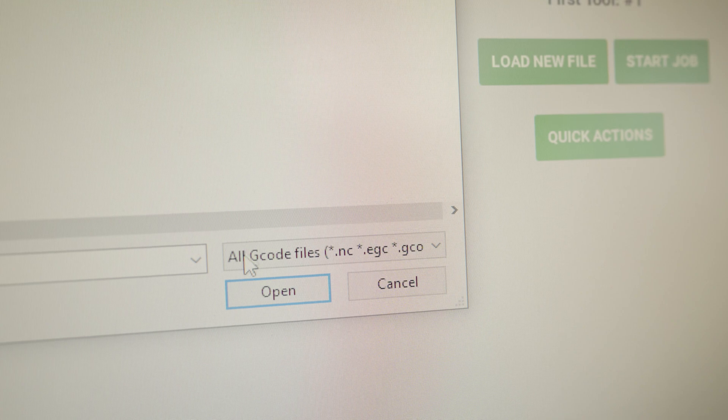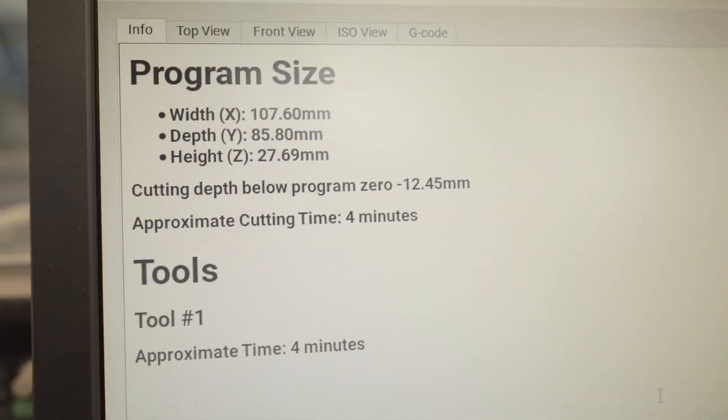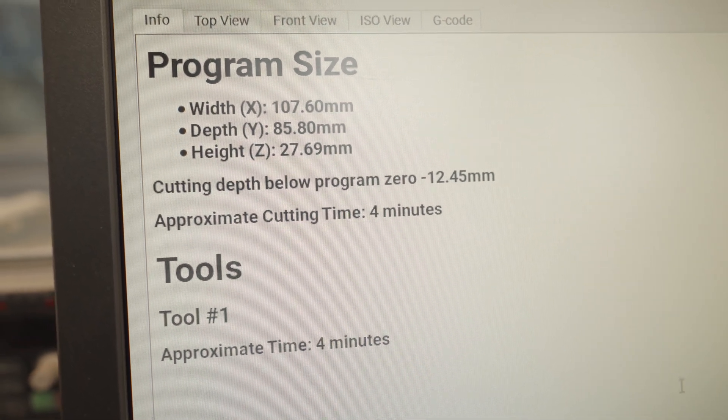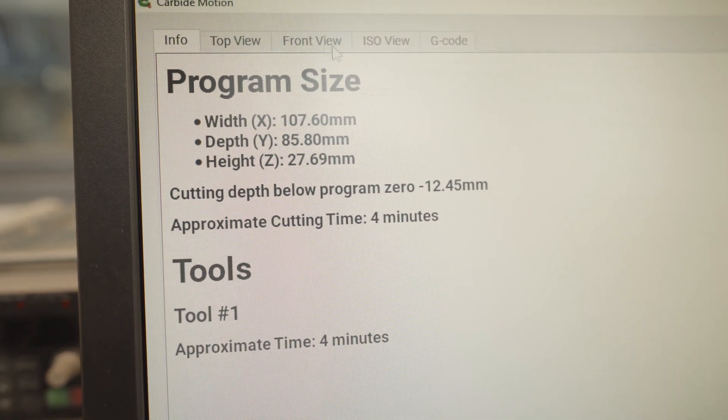Now, when the machine loads up the G-code, it's going to give you a couple of parameters. It's going to tell you the size of your program and how deep the program is going to be cutting. You want to make sure you have enough tool sticking out so that you can cut the full depth of your program without hitting the spindle. And then you also want to make sure you have enough spoil board so that the tool doesn't go hit any metal parts of the machine.